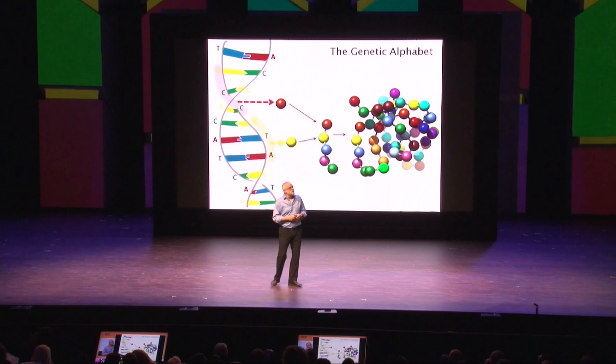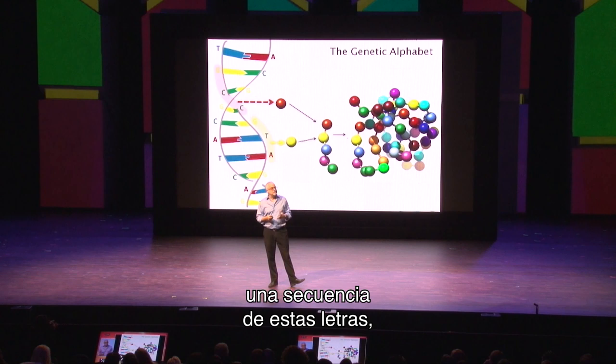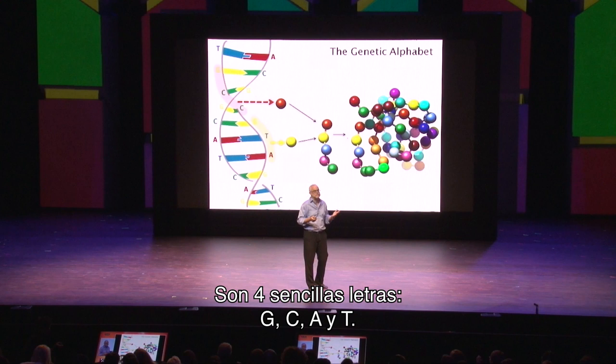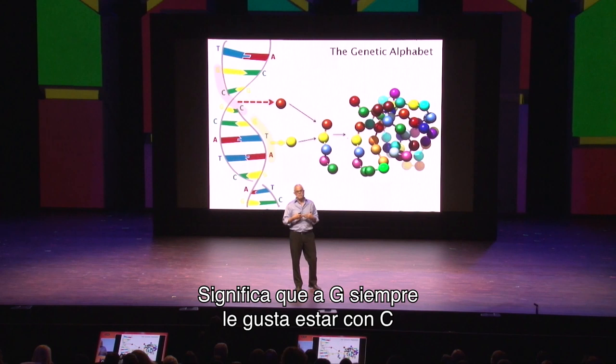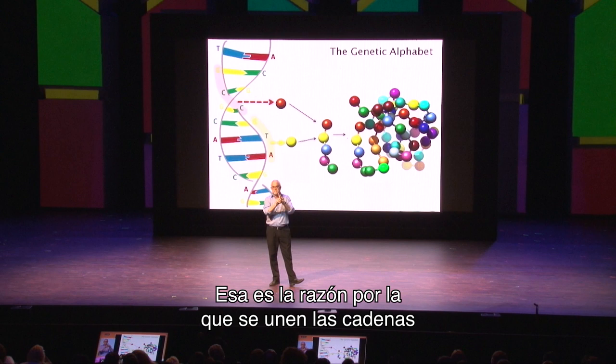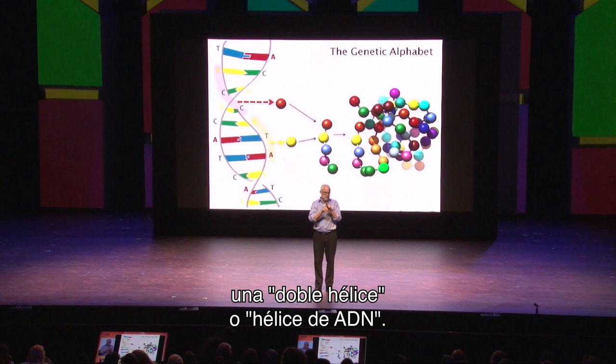The way it works is that you have a sequence of DNA — a sequence of these letters — and you form a strand of DNA. Just those four simple letters: G, C, A, and T. There's a remarkable property of those four letters: they form two base pairs. G always likes to pair with C, and A always likes to pair with T. That's why these two strands come together and form what we call a double helix, or a duplex DNA.